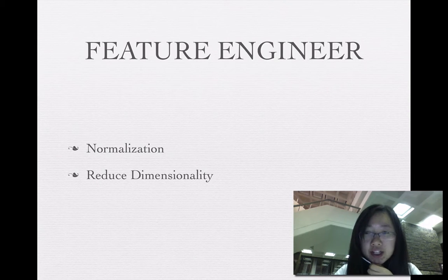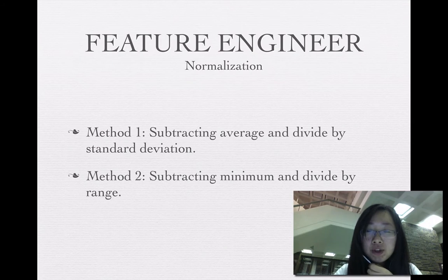I do the feature engineering work. It includes two aspects. The first is normalization and the second is reduced dimensionality. For normalization I use two methods. The first method is by subtracting average and then dividing by standard deviation. The second method is subtracting minima and dividing by range.